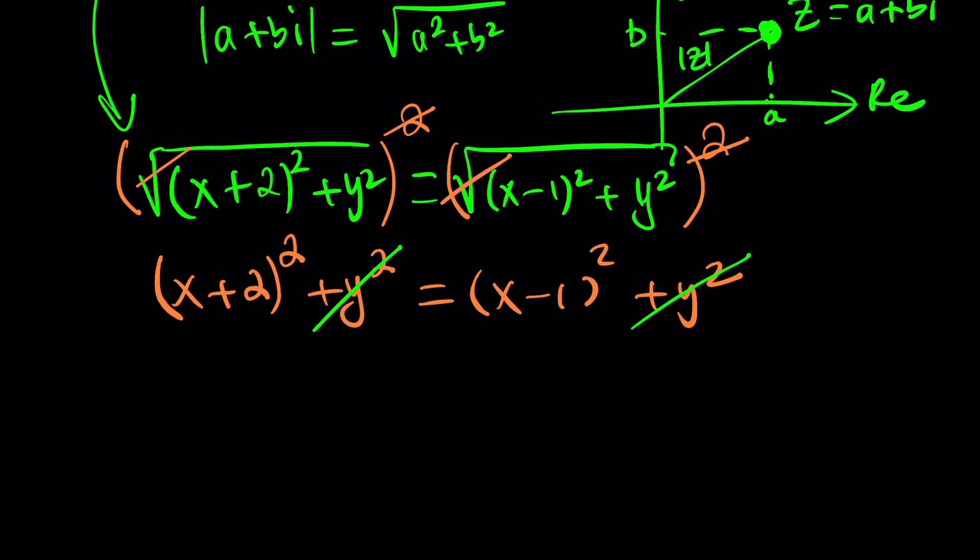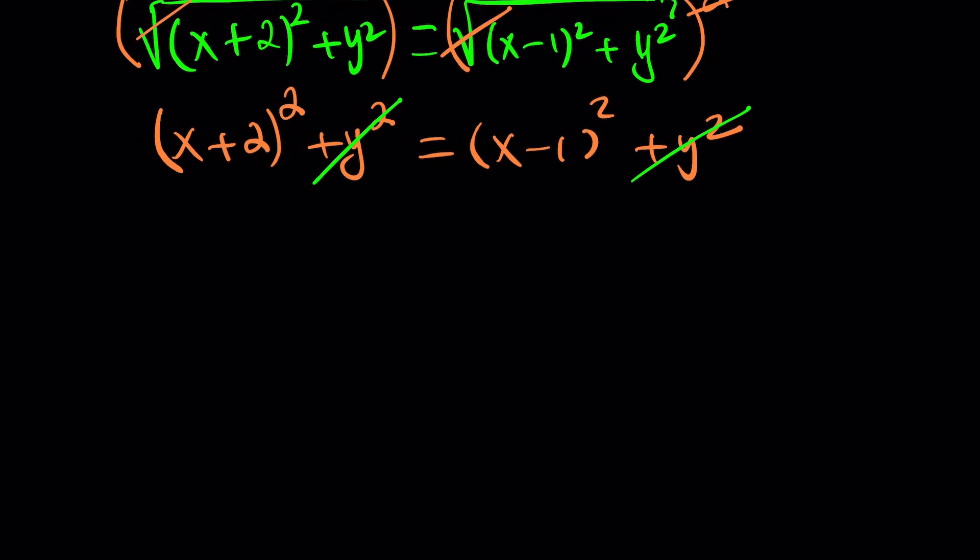Not necessarily. You could still have infinitely many solutions. Not finitely many necessarily. Anyways, let's go ahead and expand and see what happens. This turns into X squared plus 4X plus 4. And then this turns into X squared minus 2X plus 1. X squared also cancels out, which is nice. And then we end up with something like this. And let's put the X's on the same side.